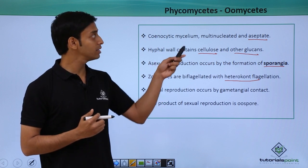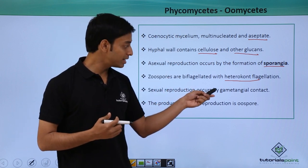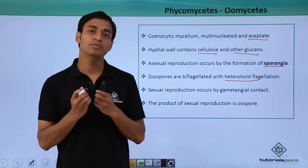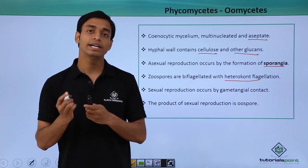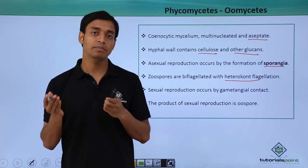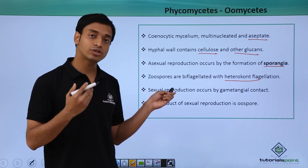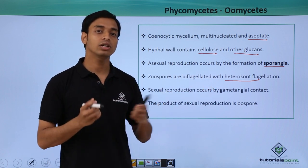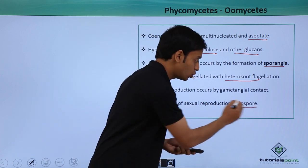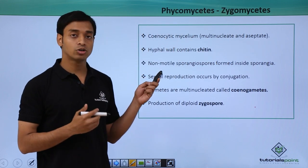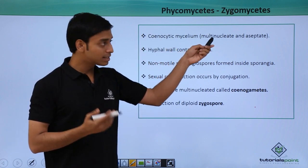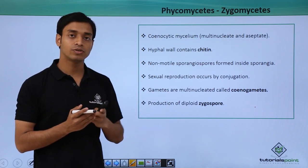Sexual reproduction in oomycetes occurs by gametangial contact — simple contact between the male and female. The male antheridium passes its content into the female oogonium through a fertilization tube, resulting in the production of an oospore. Zygomycetes also have cenocytic mycelium and are similarly multinucleated and aseptate, like oomycetes.